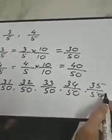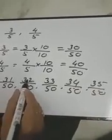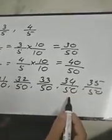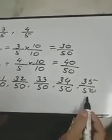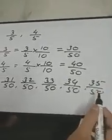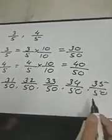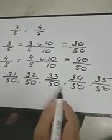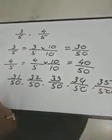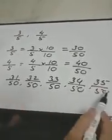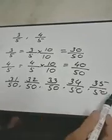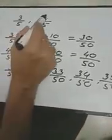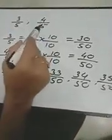If you want to simplify 32 by 50, 34 by 50, or 35 by 50, you can simplify them or you can leave them as they are. In both cases your answer will be the same. So we have written the 5 rational numbers between 3 by 5 and 4 by 5.